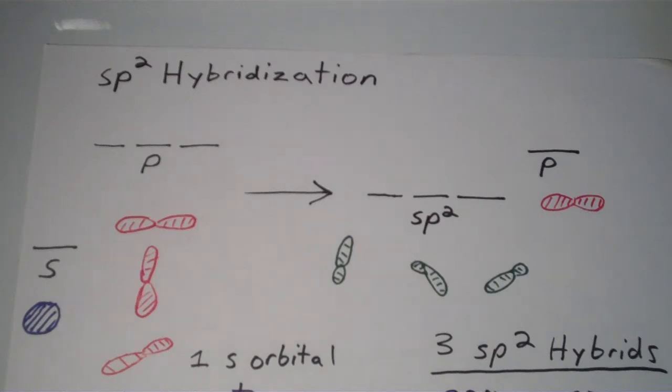Okay, so now I'd like to talk about sp² or sp² hybridization. So we saw in the last video when we talked about sp³ hybridization that the s orbital can combine with the p orbitals to form these sp hybrid orbitals.